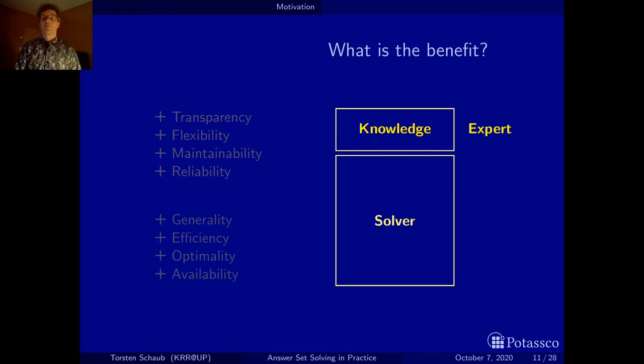So what do we gain? First of all, we gain transparency, because the knowledge or the language in which the knowledge is expressed is knowledge representation language and should be easy to read. Normally specifications are also very succinct. You can more or less read them. Flexibility. Since it's a small specification, they are easy to change and to adapt to new, I don't know, new legislations or whatever happens. The same applies then to maintainability. So you can easily maintain something that is understandable and short. And finally, reliability.